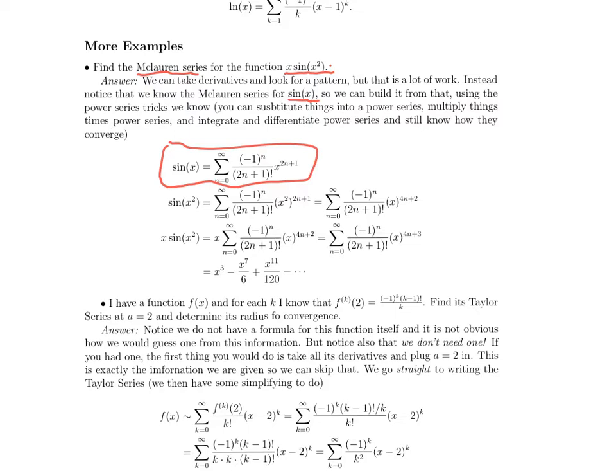So sin(x²)'s Taylor series is the sin(x) Taylor series with x² plugged in where before we had x. So every x, every green x, was replaced by a yellow x². And then we do a little simplifying. When we looked at (x²)^(2n+1), that's a sequence of exponents, so that's the same as x raised to the 4n+2. That's the Taylor series for sin(x²).